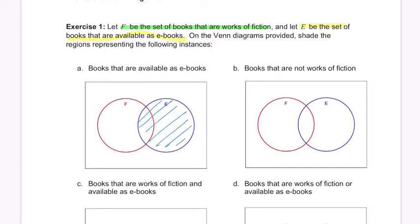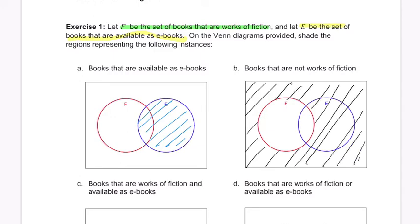Books that are not works of fiction. So this circle is fiction. So everything not in that circle would fit this definition here. Right? Everything not in this circle. I'm just going to shade it nice and gently. There we go. Let's keep going.